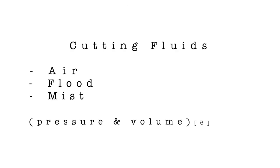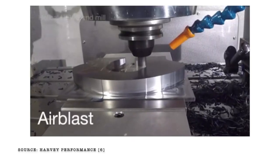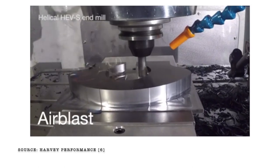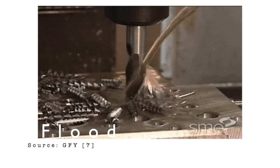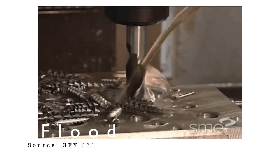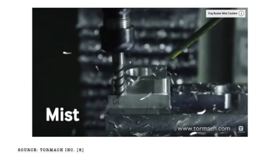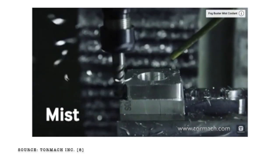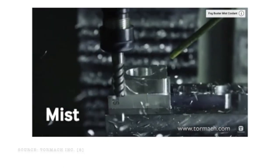In order to deliver the cutting fluid, there are three main methods: by air, flood, or mist. Air blasting is great for chip removal but it does not provide any cooling. With flood cooling, we get the benefit of chip removal and lubrication, but it does leave a big mess to clean up. Mist cooling is a hybrid of air blasting and flooding, so it provides great lubrication but not enough cooling.